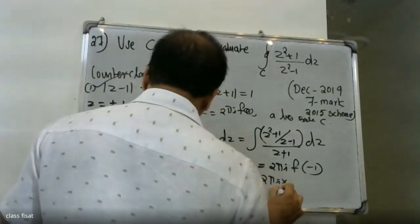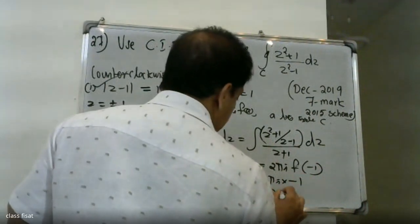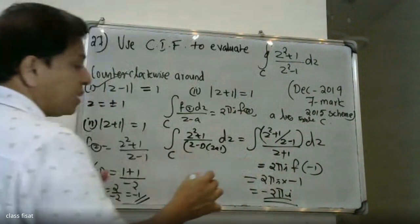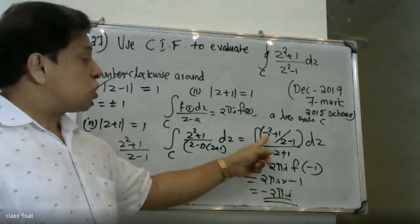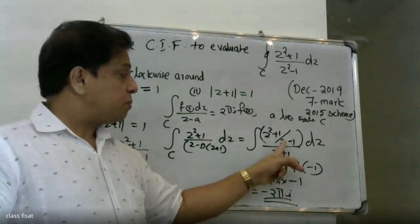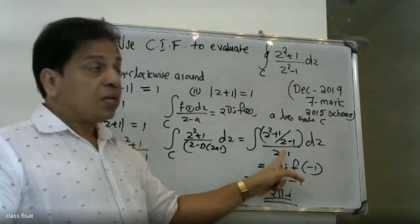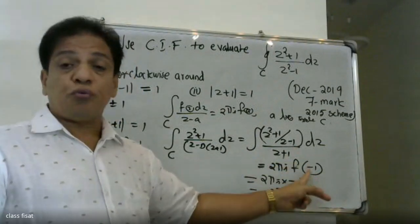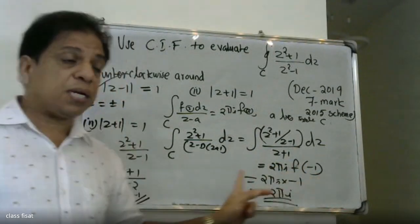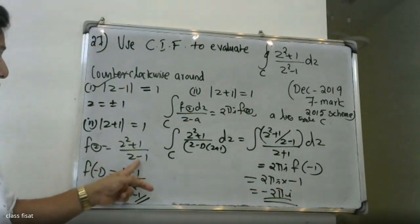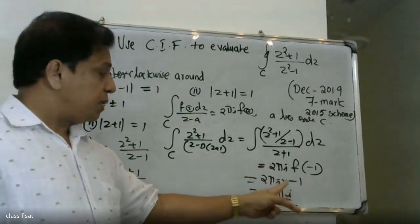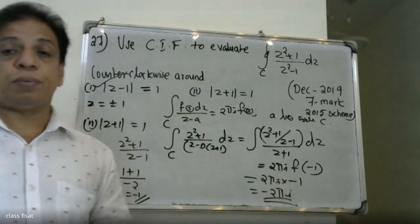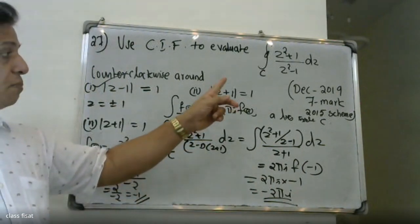Computing f(-1): f(z) = (z² + 1) / (z - 1), so f(-1) = ((-1)² + 1) / (-1 - 1) = (1 + 1) / (-2) = 2 / (-2) = -1. Therefore the integral equals 2πi · (-1) = -2πi. This is the answer for the second region.